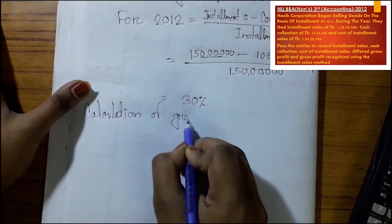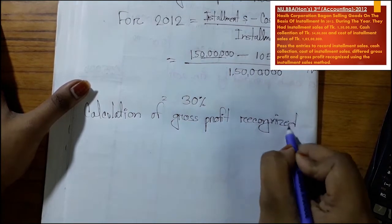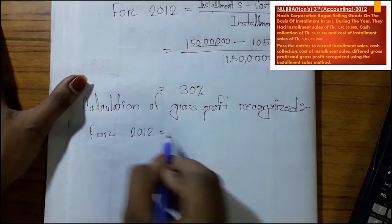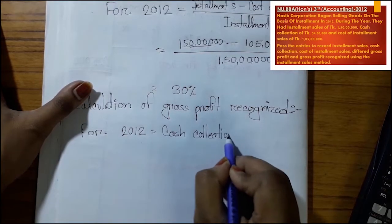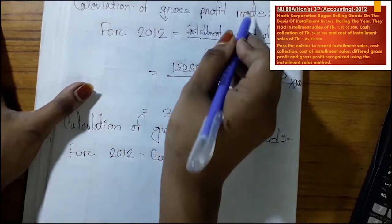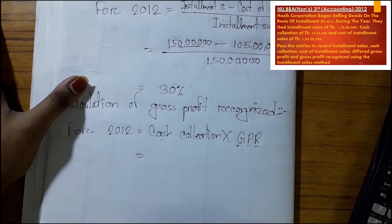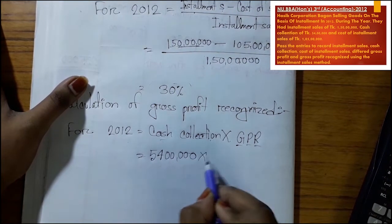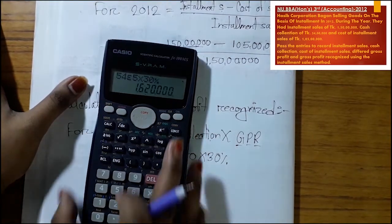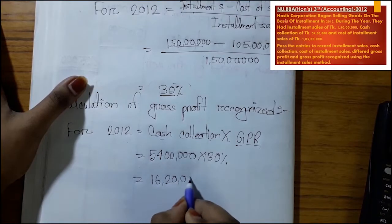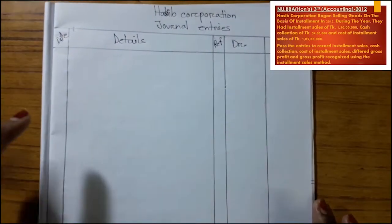For gross profit recognized for 2012, we multiply the gross profit rate by the cash collection. Cash collection was TAKA 54 Lakhs multiplied by the gross profit rate of 30%, giving us TAKA 14 Lakhs as gross profit recognized.